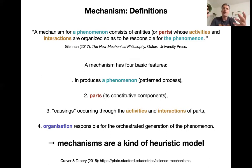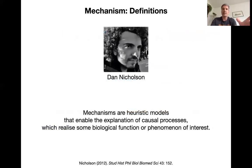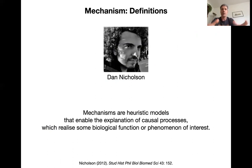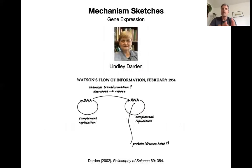Mechanisms are a kind of heuristic model — they don't have to be a formal model and can occur in many different ways. Dan Nicholson's 2012 paper defines them as: heuristic models that enable the explanation of causal processes which realize some biological function or phenomenon of interest. Mechanisms are explanatory epistemic tools, just like models, and can be formulated in different ways — the idea is a little broader than the formal model idea.